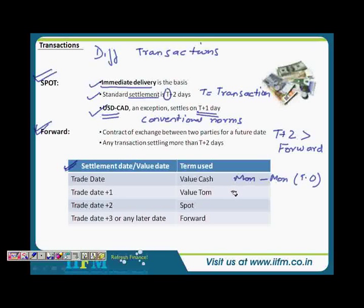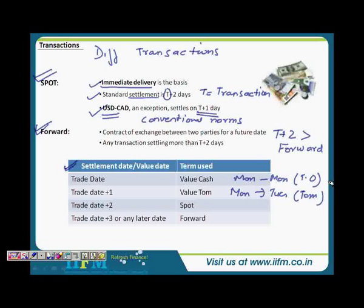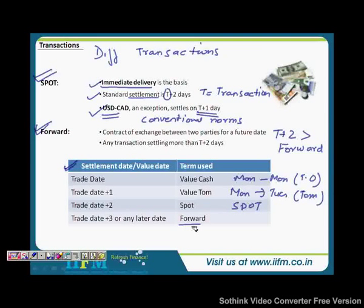If the transaction is settled on trade date plus one day, it is called a TOM transaction. USD/CAD is actually a spot transaction that settles on T+1. For non-USD/CAD pairs, trade date plus one is a TOM. Trade date plus two is the standard spot transaction, which we have already discussed at length.